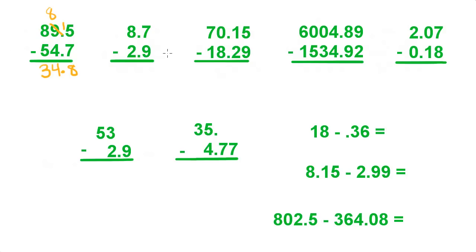Over here we have 7 minus 9. We can't do that so we have to borrow from the 8. Make that a 7, make that 17, and 17 minus 9 is 8. Bring down the decimal point — very important. 7 minus 2 is 5.